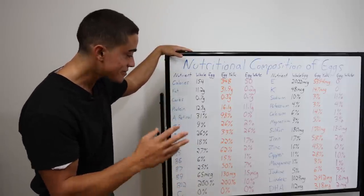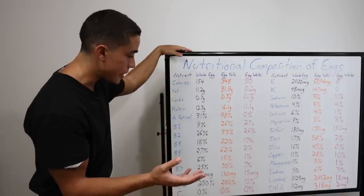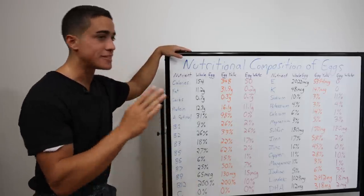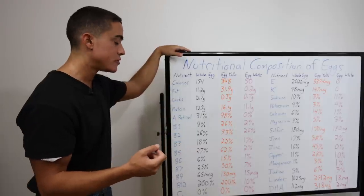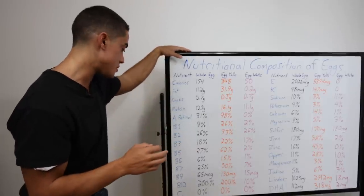B7, biotin, it's actually pretty good across the board, but egg whites have been said to deplete biotin. Is that true? If you're having a high quality probiotic and you're eating carbohydrates, I'm not sure it's that much of a concern.